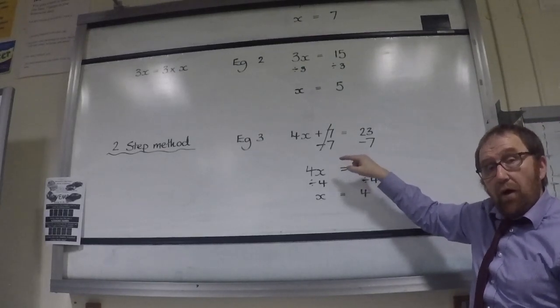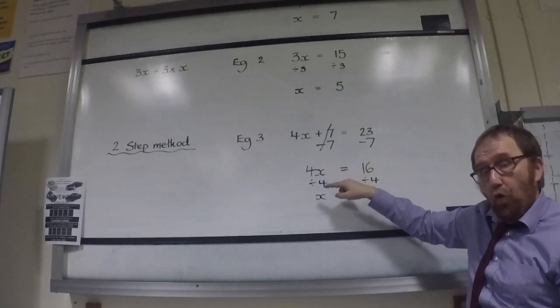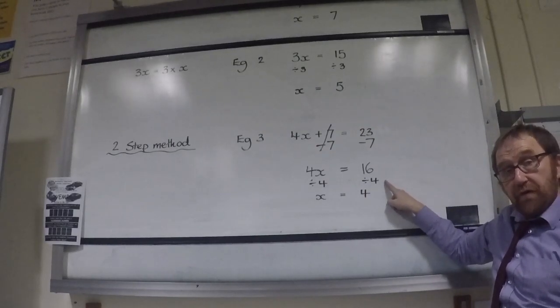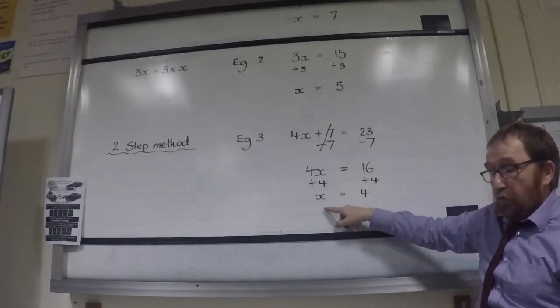Now, I don't want 4x, I want x. So I must divide by 4. What I do to one side, I do to the other. So 4x divided by 4 leaves x, and 16 divided by 4 leaves 4.